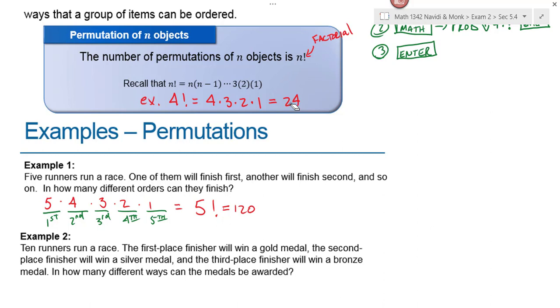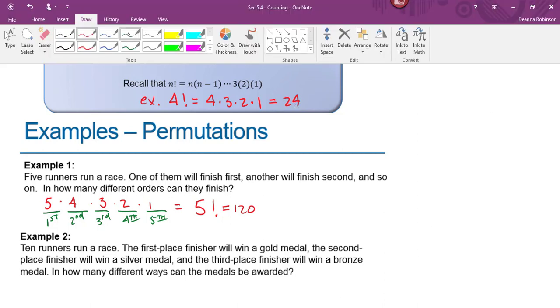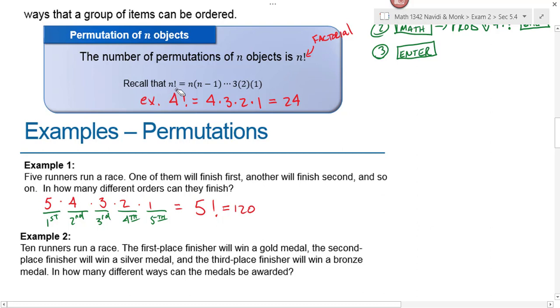I also illustrated that this formula we use for the number of permutations of n objects when I use all of them. The multiplication principle for counting develops that formula for us, doesn't it?